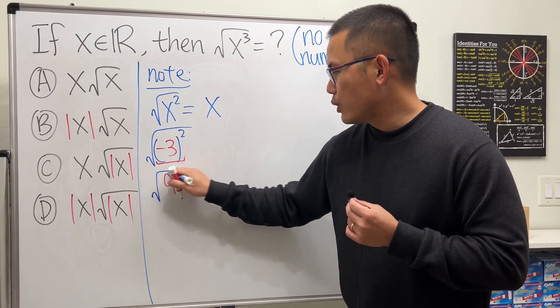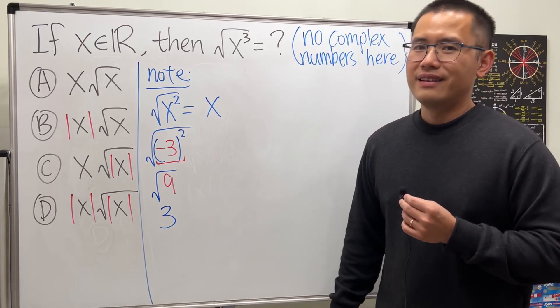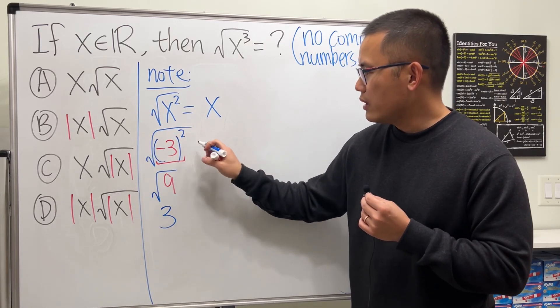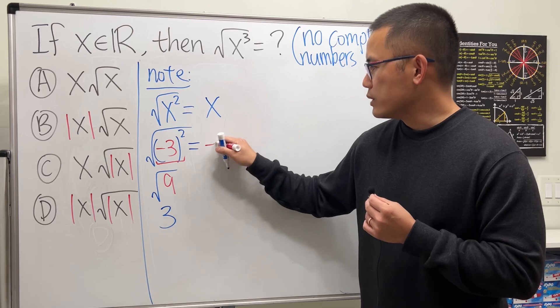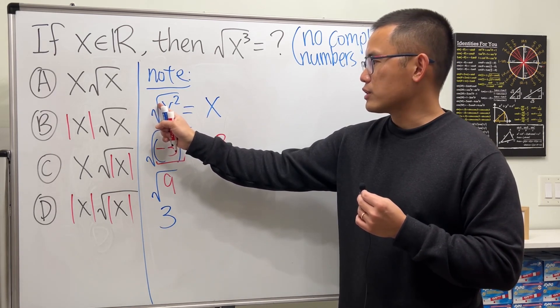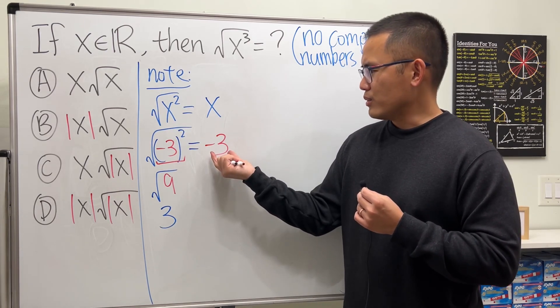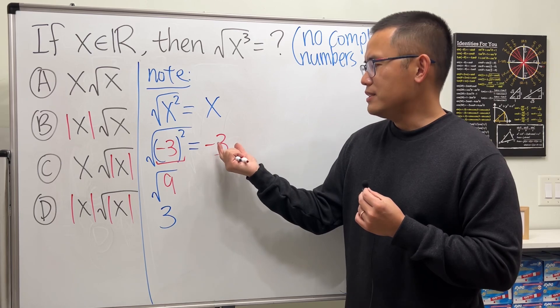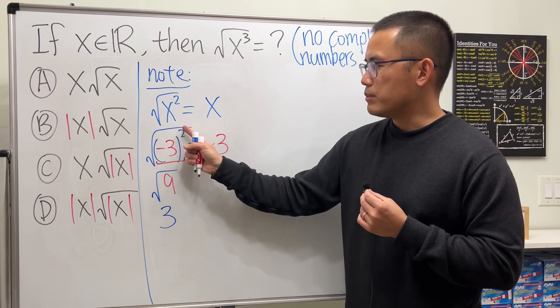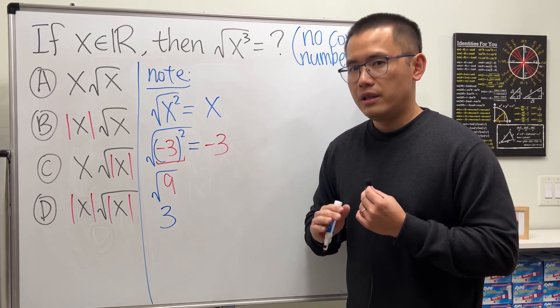But earlier, if you just cancel the square root and then the square, it looks like we'll just end up with negative three, right? That's what this formula says - you just cancel the square root and then the square, you just get x back. This is no good, because the output of a square root, whenever we use this symbol, it means the principal square root. The output should be non-negative.